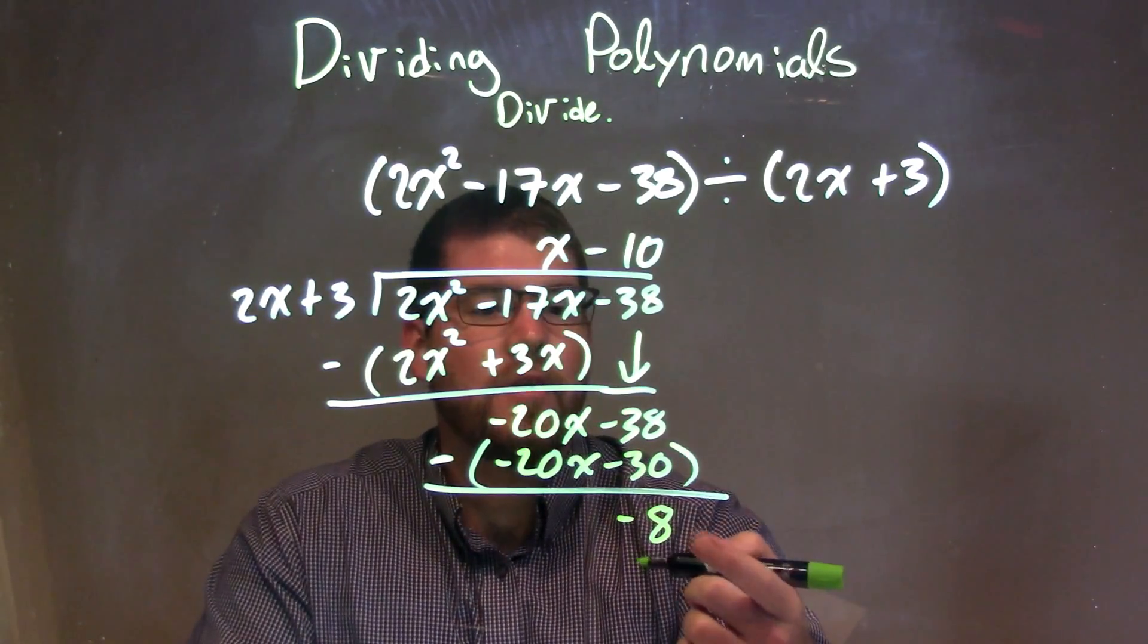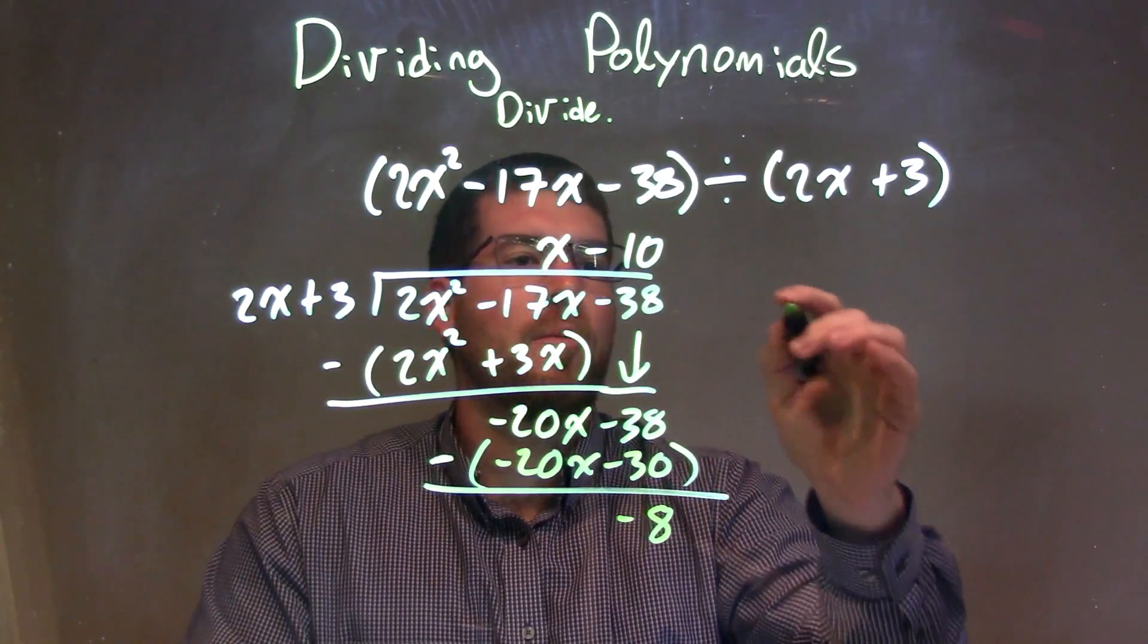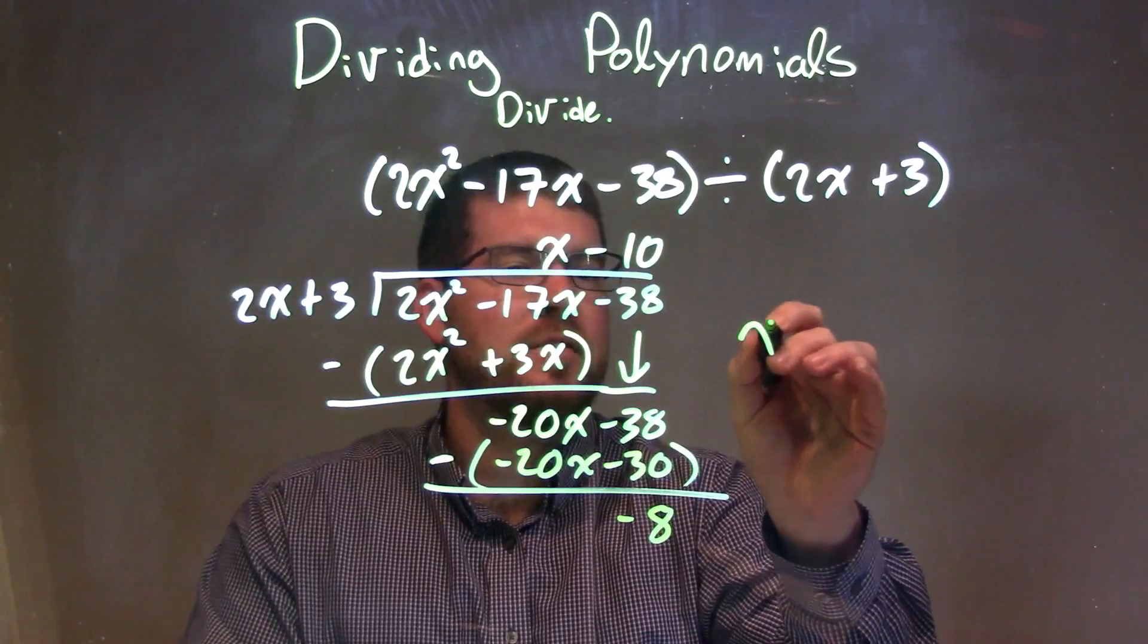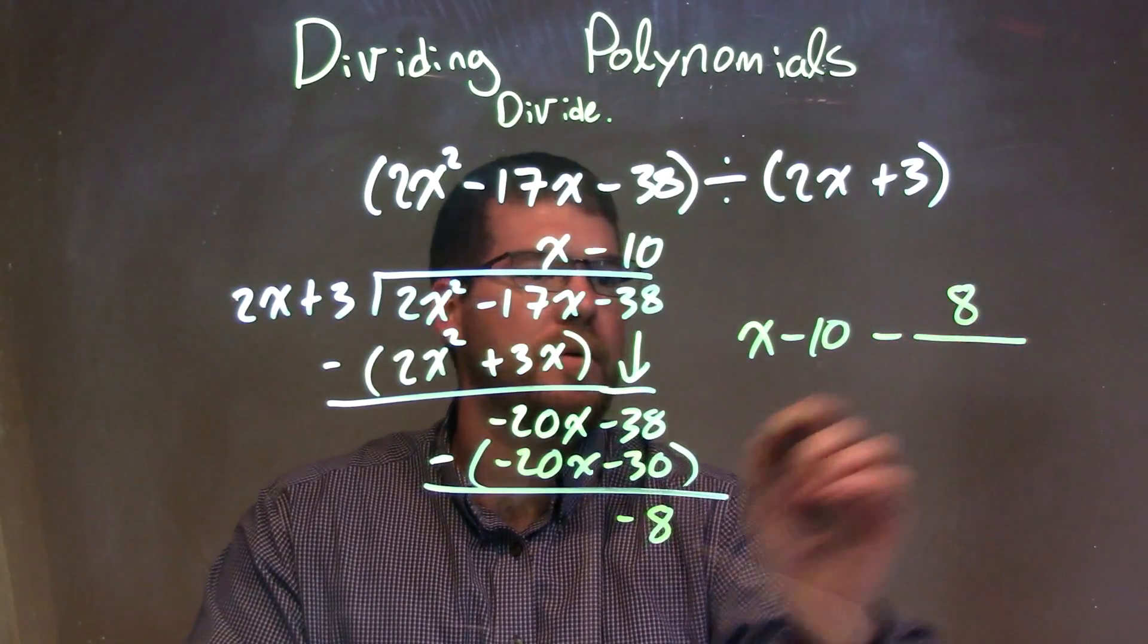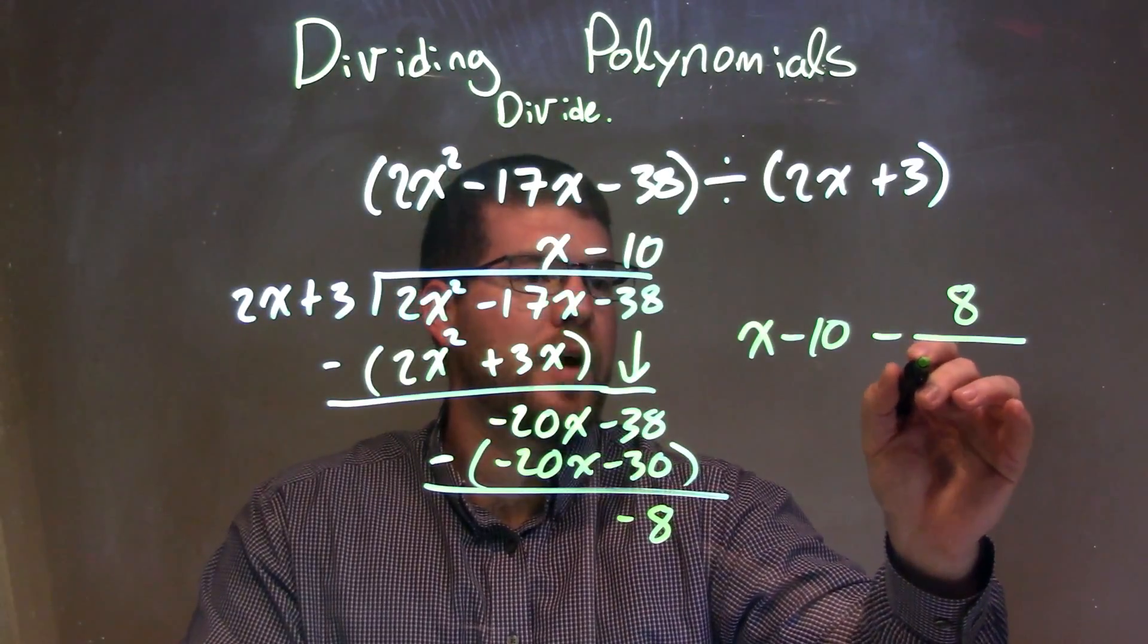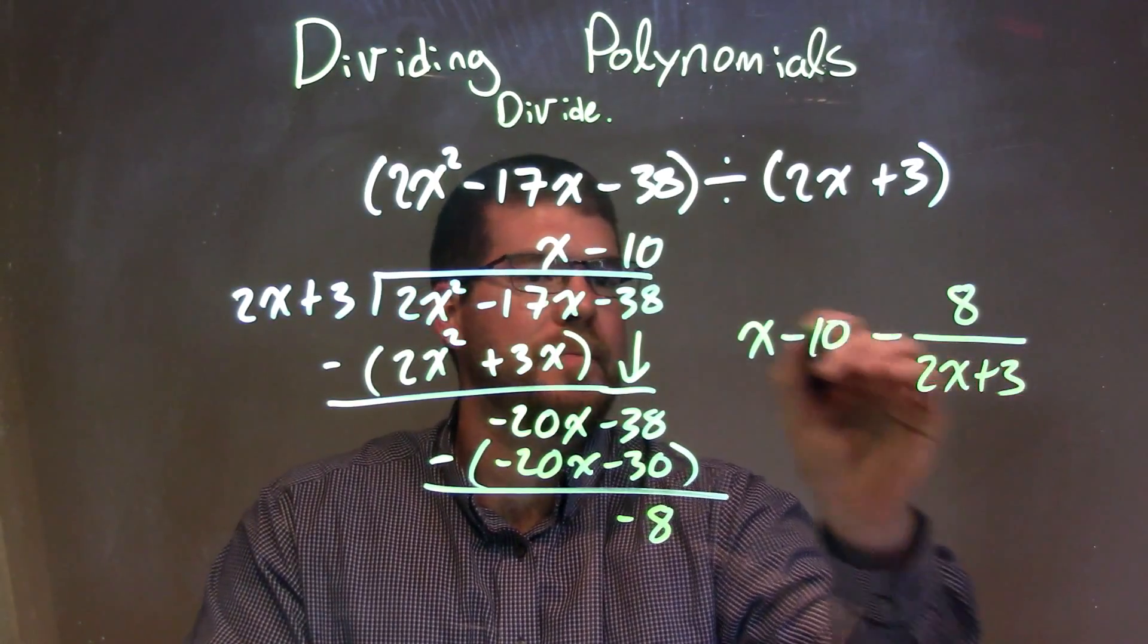Now I have my remainder. My final answer is x minus 10, minus 8 (my remainder) over my divisor 2x plus 3. And there we go.